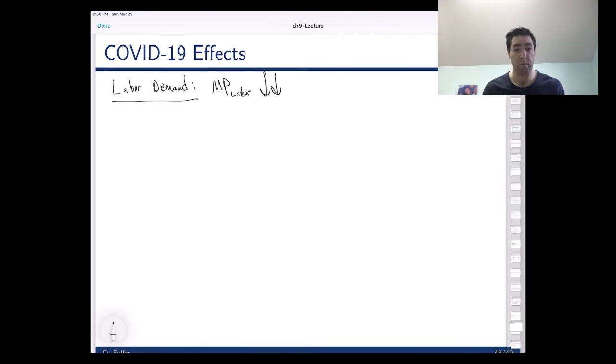Workers haven't become less productive - if I worked at a restaurant before I'm not any less productive than I was prior to this. But what's happened is that demand for goods and services has gone way down. Remember that's one of the things that shifts the labor demand curve. Demand decreases, labor demand is going to go down, and so the labor demand curve is going to shift to the left quite a bit.